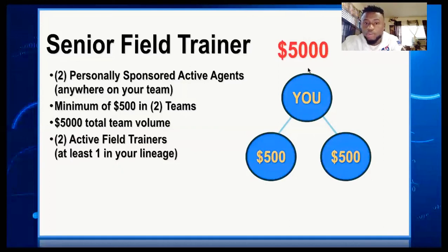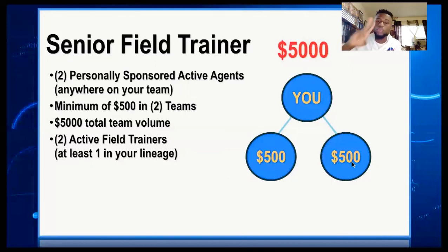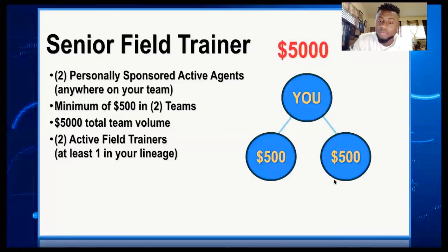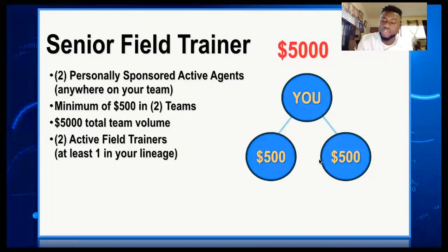OK. Now, to summarize: the total volume must reach 5000, each part of your team must have a minimum of 500 in volume, and you become a Senior Field Trainer. Make sure you have a total of 5000 in volume, make sure the 2 people you signed directly are active, and make sure each leg has a minimum of 500. When you have 2 Field Trainers in your team and the total volume, you become a Senior Field Trainer.